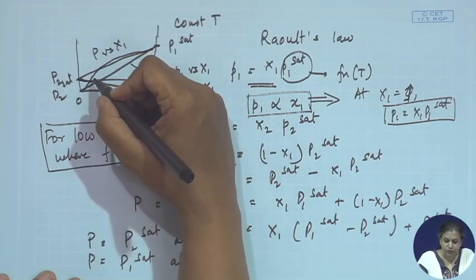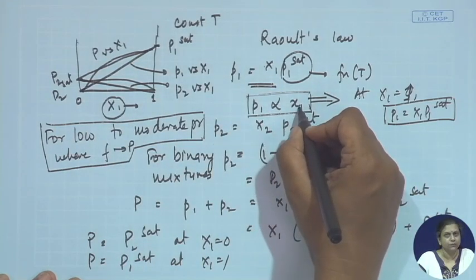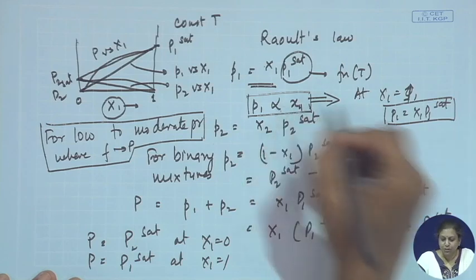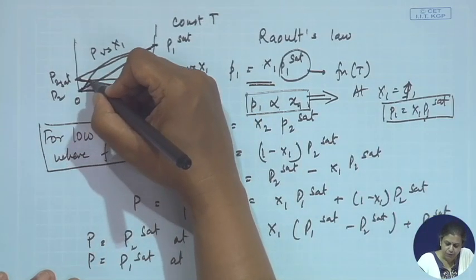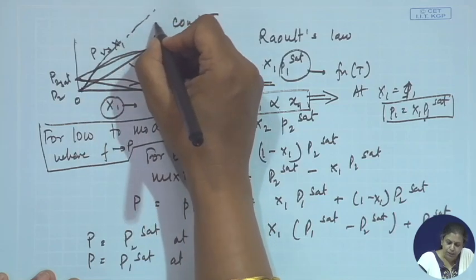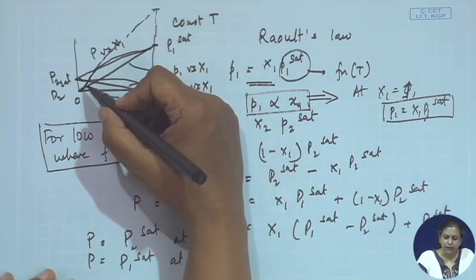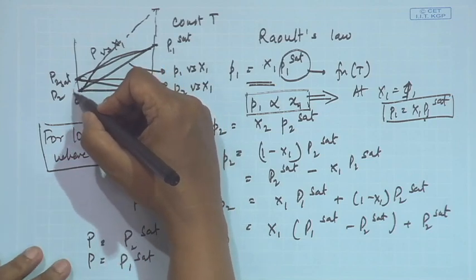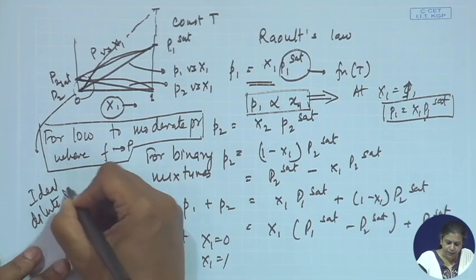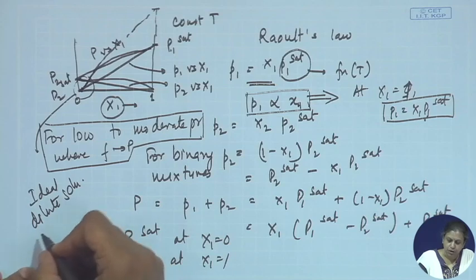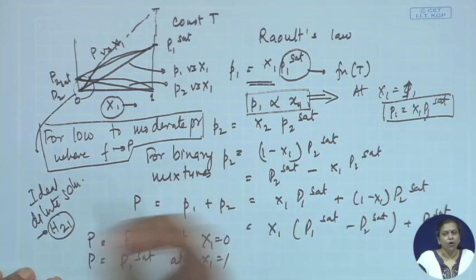I had also mentioned that for very low concentrations, p₁ is still proportional to x₁, but under those conditions the proportionality constant is not equal to the saturated vapor pressure of that component. If you extend the linear portion, the intercept is at a different point compared to p₁ saturated. We termed this condition an infinitely dilute or ideal dilute solution, where the proportionality constant equals the Henry's constant of component two in component one, or vice versa.